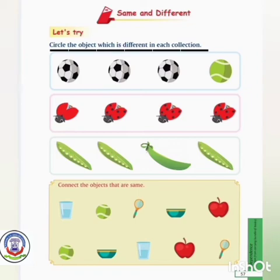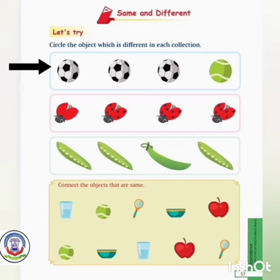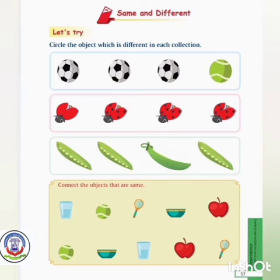Circle the object which is different in each collection. Now let us see this picture of balls and identify which balls are the same and which is different. These three balls are the same and this one is different, so we will put a circle over it.